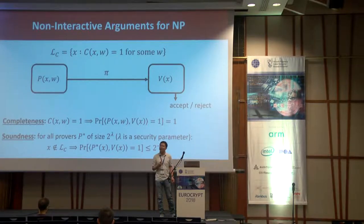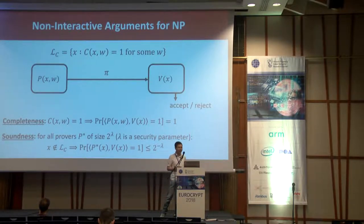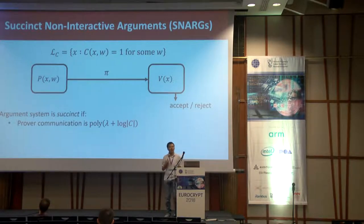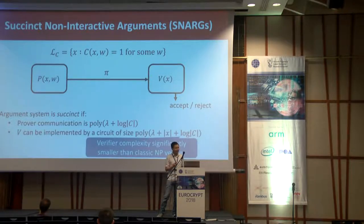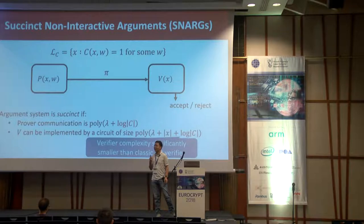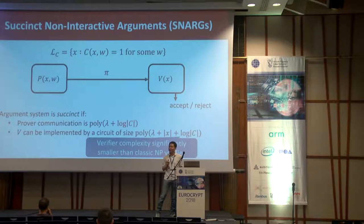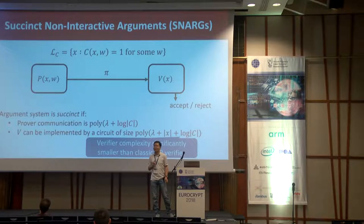By giving this concrete definition for soundness, we're able to perform comparisons between different constructions of argument systems. We say that a non-interactive argument is succinct if the proof is very short — namely, the length of a proof is polynomial in the security parameter and polylogarithmic in the size of a circuit. In addition, the verifier's algorithm can also be implemented by a Boolean circuit whose size scales only polylogarithmically in the circuit size. In particular, the verifier complexity in a SNARK system can be significantly smaller than that of the classic NP verification algorithm.